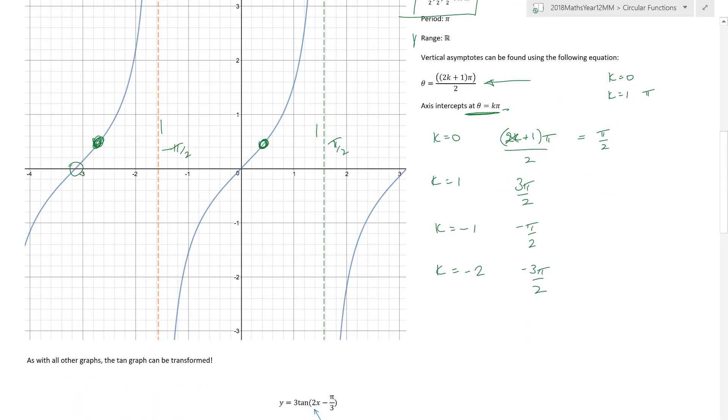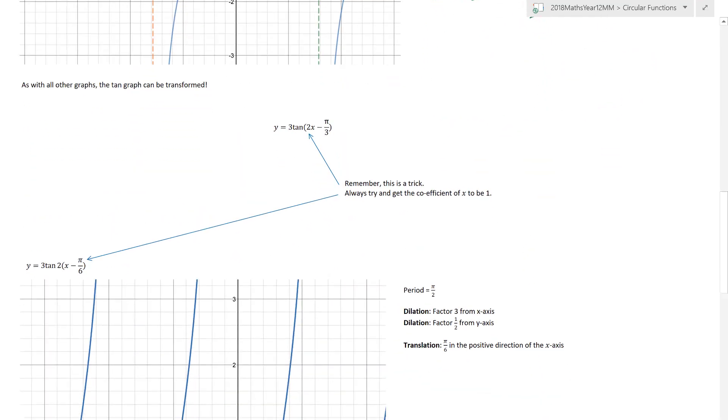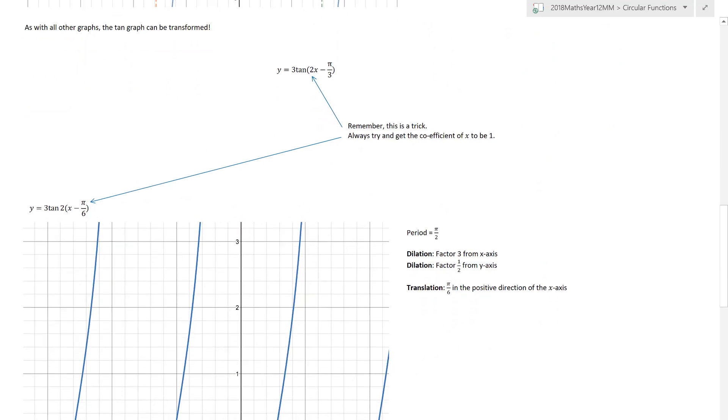Really, really beautiful, really useful. And again, like with all other graphs, the tan graph can in fact be transformed. Like we've done in so many lessons before, this is a trick. 3 tan, open bracket 2x, we want this value of x to have a coefficient of 1. So we have y equals 3 tan, take the 2 outside the brackets, that becomes minus pi on 6. Now I have a graph that I can actually look at. As I've said here, we then can say, I have a dilation of 3 from the x-axis, dilation of factor of a half from the y-axis, and then a translation parallel to the x-axis, or in the positive direction of the x-axis, by pi on 6.